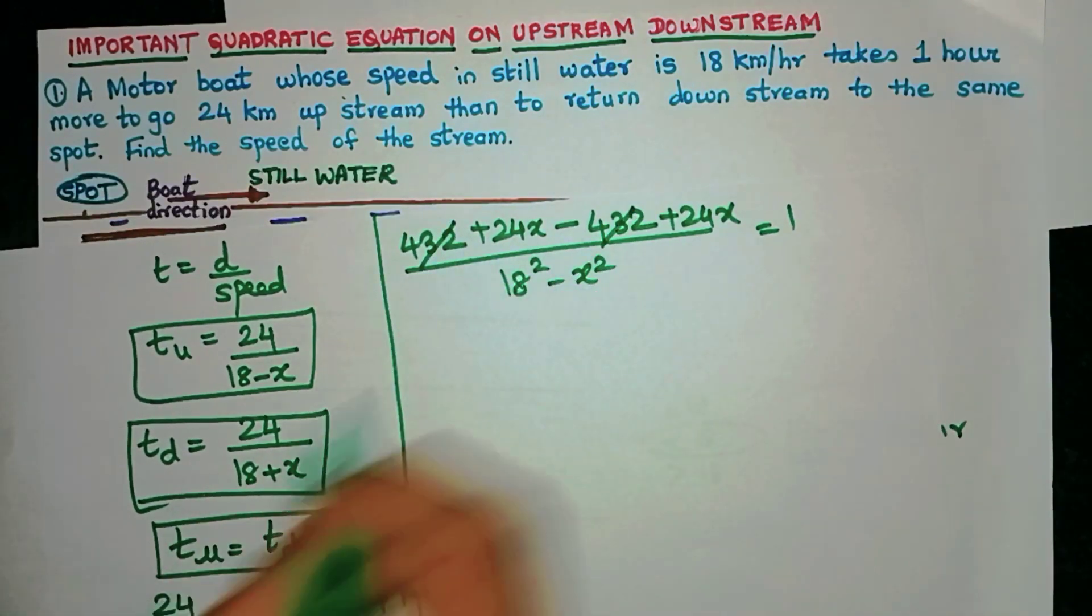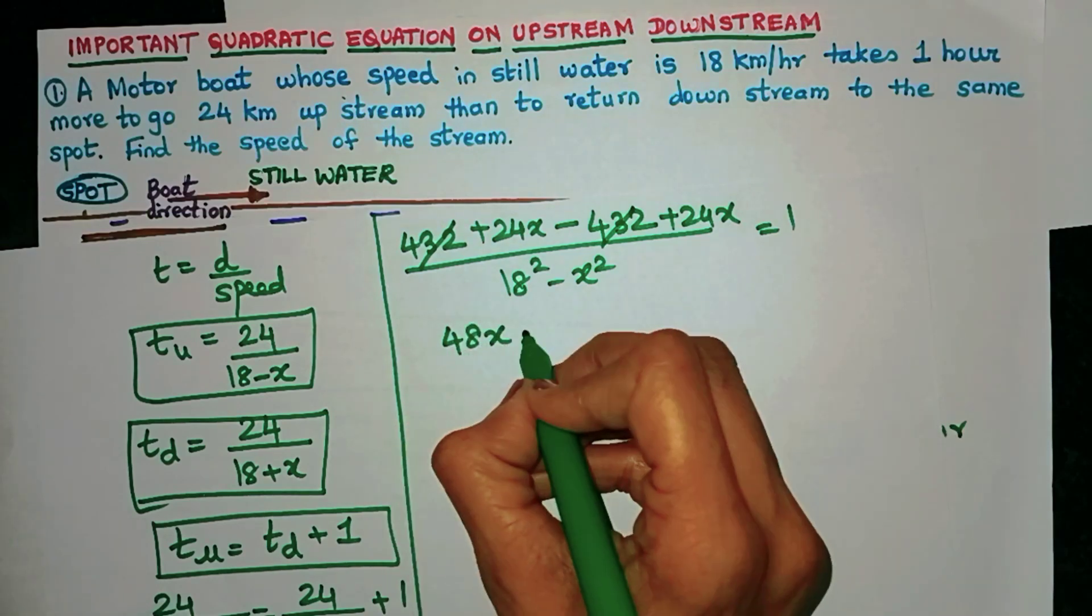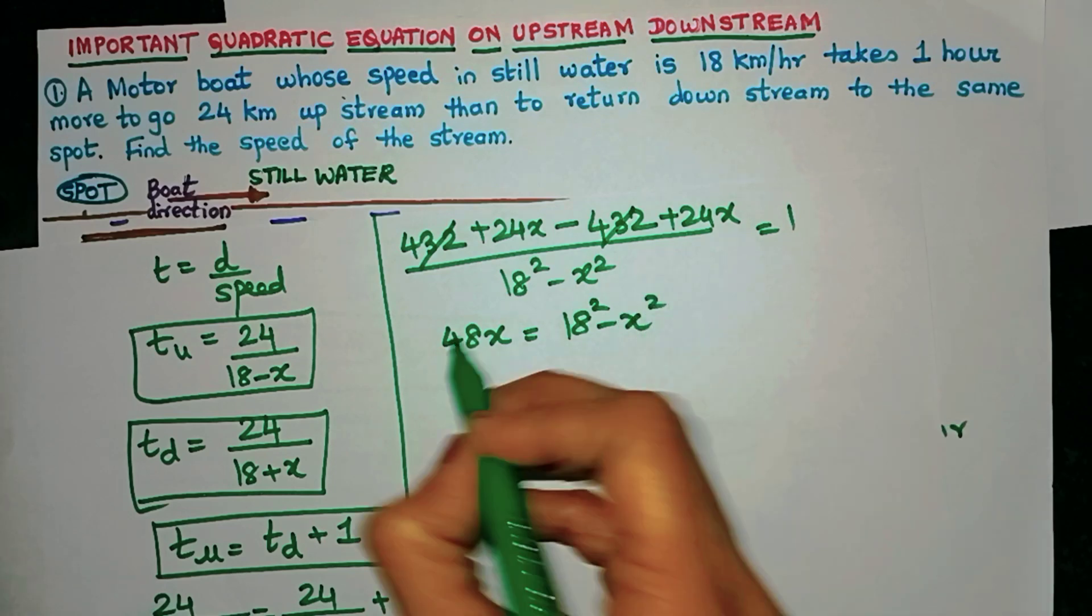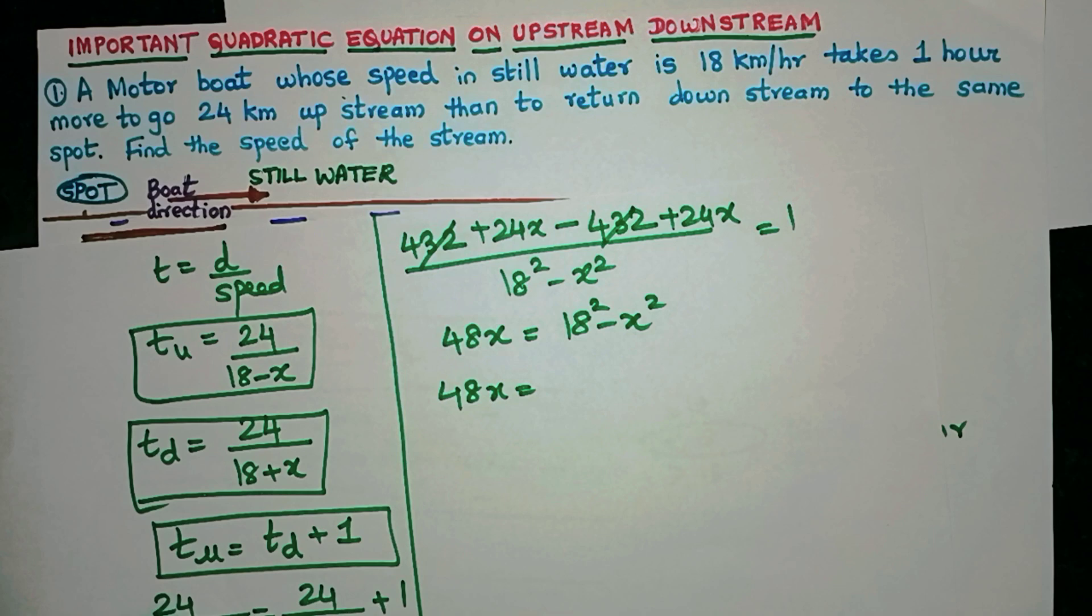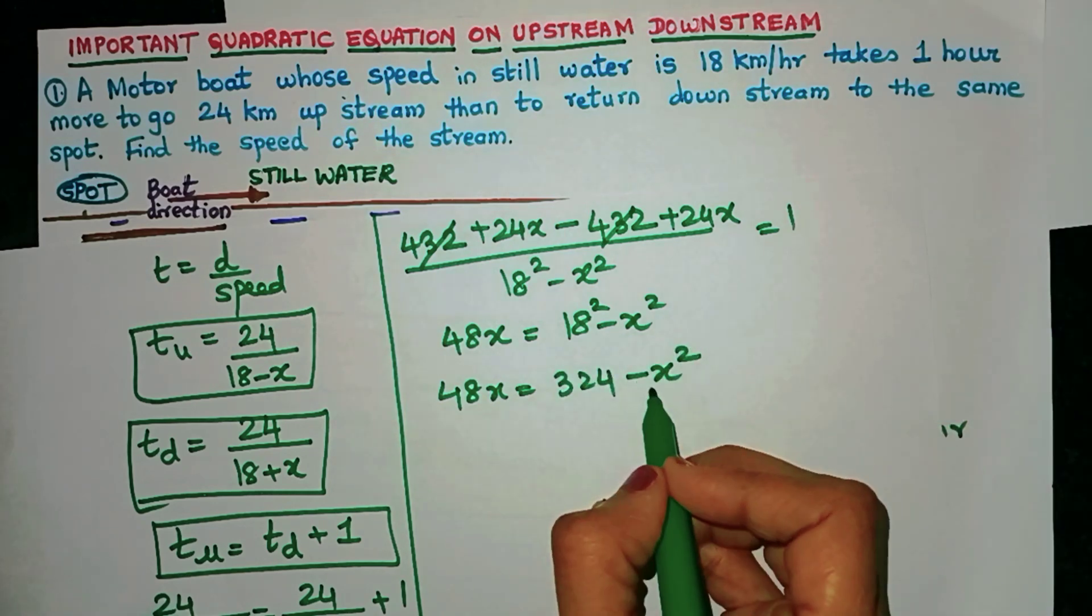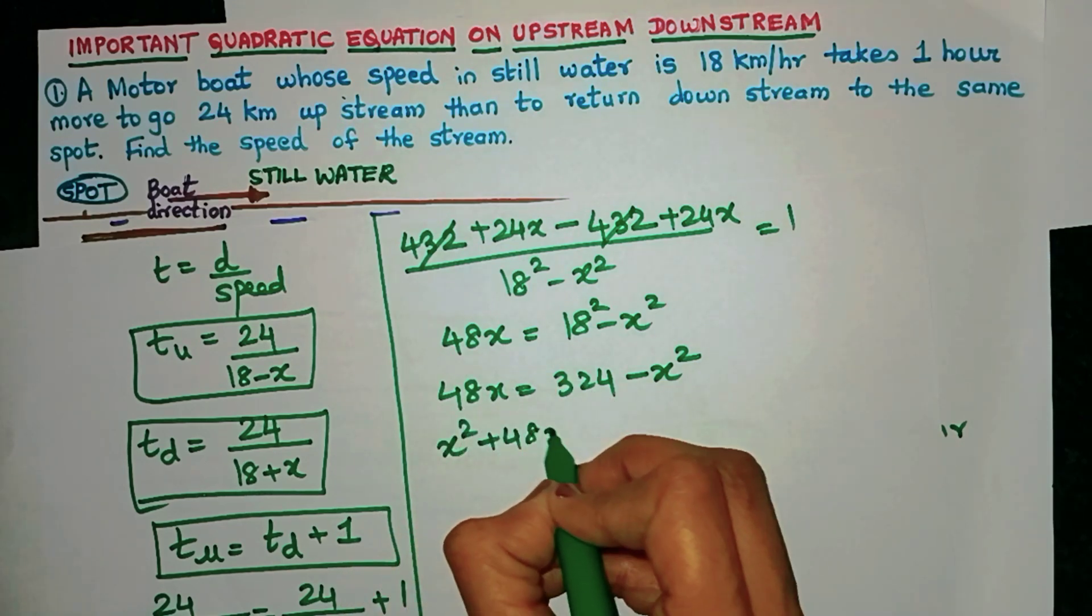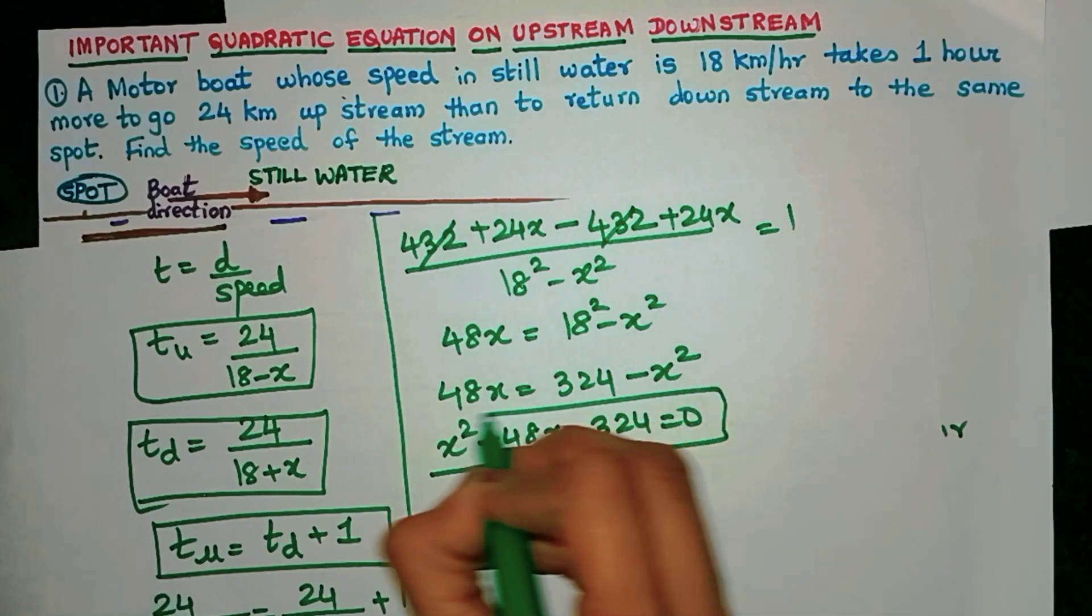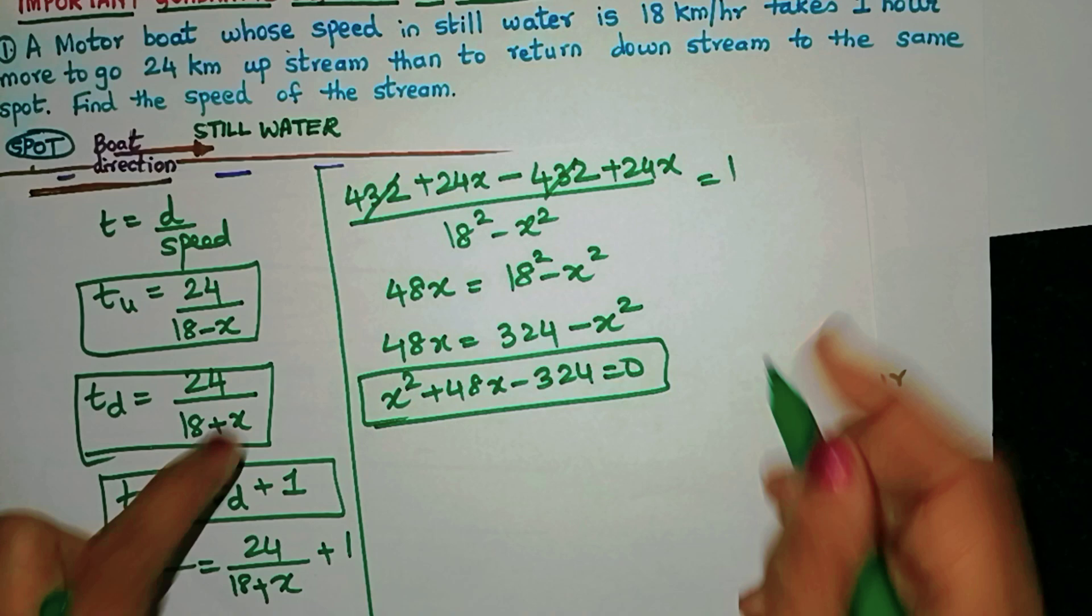Numerator: these two will get cancelled, 24 plus 24 is 48x. If I want, I can bring this to the other side to get rid of the denominator. So 48x = 18 square, I already calculated it's 324 minus x square. It's better if I make my x square positive, so let me bring it to the other side. This is my quadratic equation. What do we have to do? Splitting of the middle term.